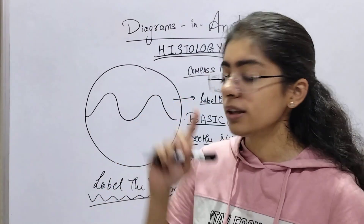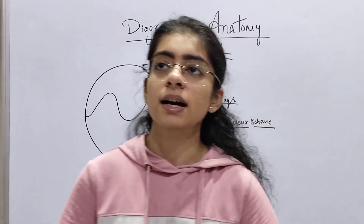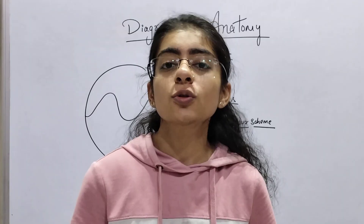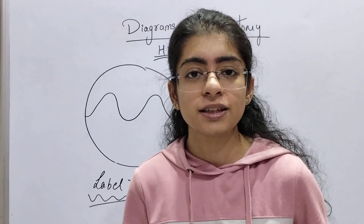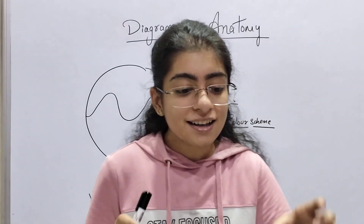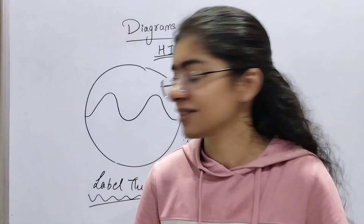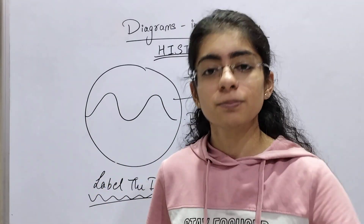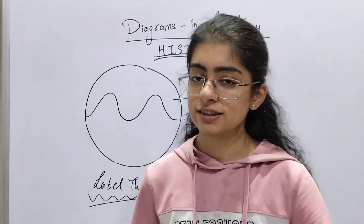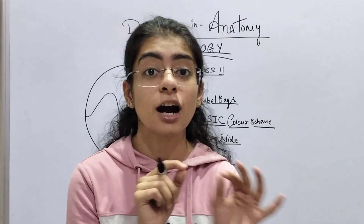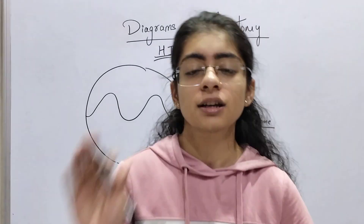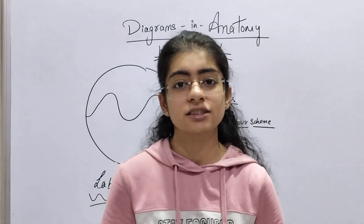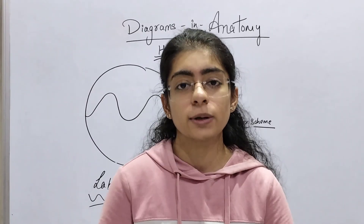One major mistake is not knowing how to draw basic structures — like columnar epithelium or cuboidal epithelium. This is why record books are rejected by teachers. I have a separate histology series where I explain how to draw each type of epithelium and connective tissue in detail, including correct margins and drawing techniques.